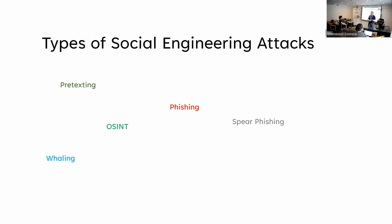You have whaling — because in information security, things need to have cool names. Whaling is targeting a specific VIP person or pretending to be one. Maybe the chancellor of your university calls and tells you to click a link, or it's the chairman of a company or a manager of a collaboration partner. It's a VIP being impersonated or specifically targeted.